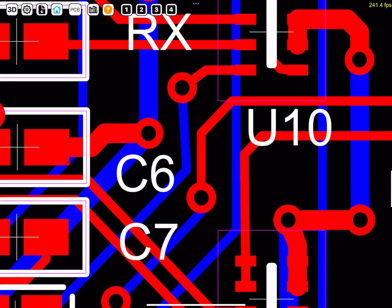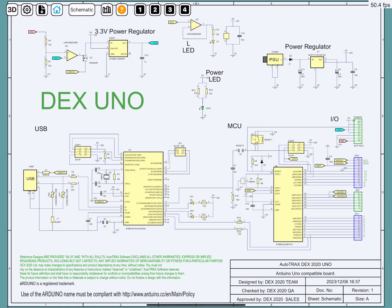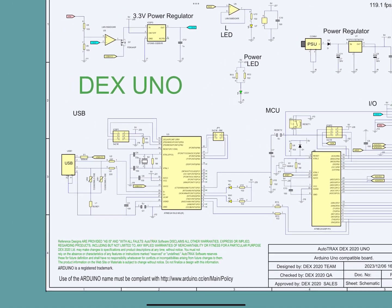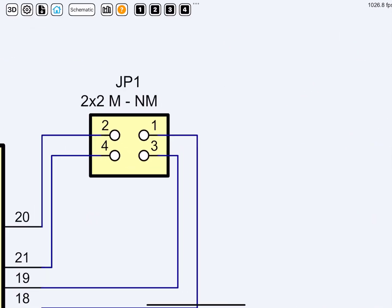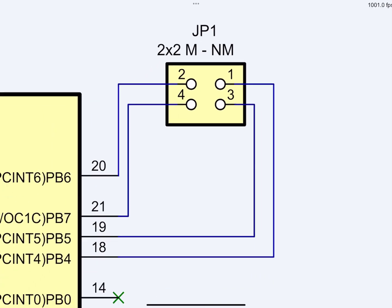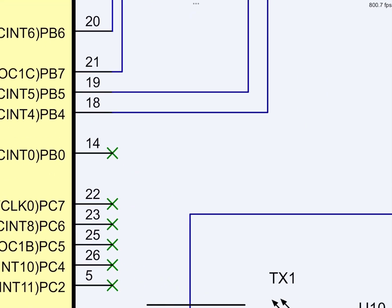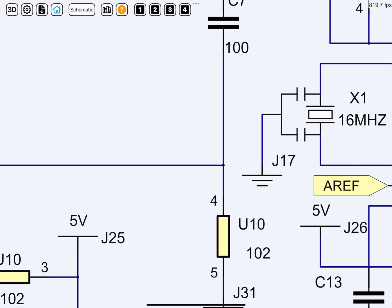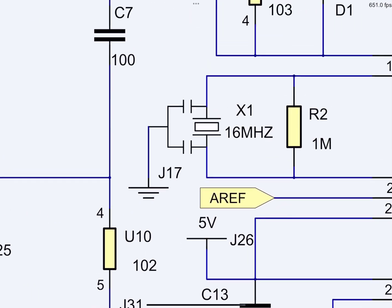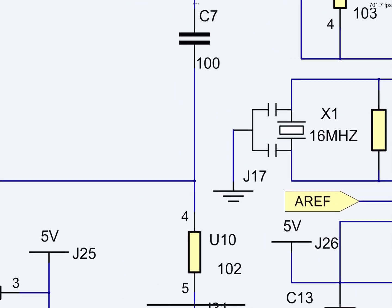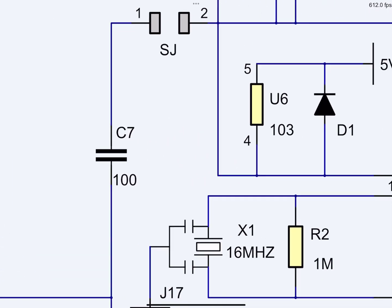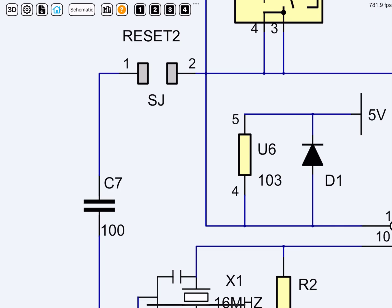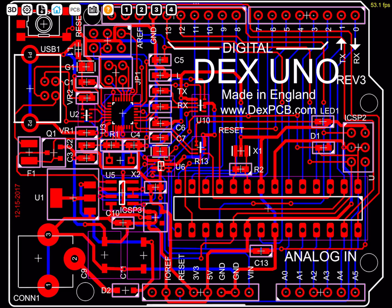I will now display the schematic for this PCB by clicking on the PCB button at the top. Now we see the schematic. Again I will pan and zoom around the schematic using finger gestures. As shown by the display frame rate in the top right, you can see that the frames per second is even faster than the PCB frames per second. Returning to the PCB view, I will show you the settings panel.